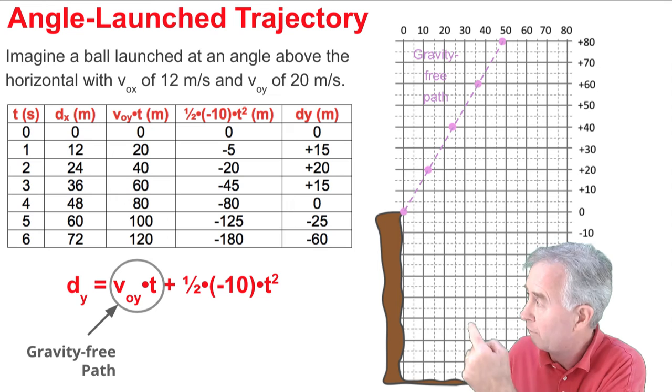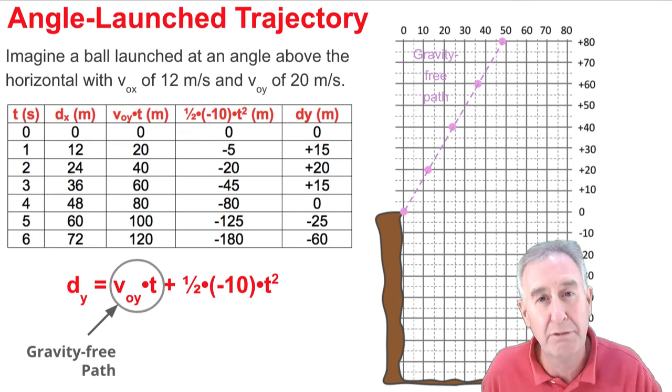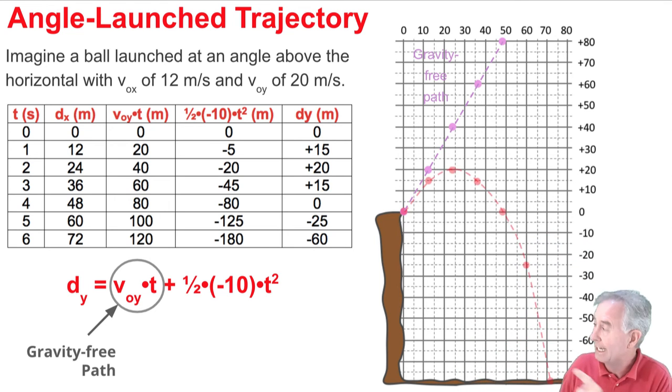It tells us how far the projectile falls below the gravity-free path for each of those times. And it yields this red line, the true path of the projectile, that takes into account both the gravity-free and the effects of gravity.